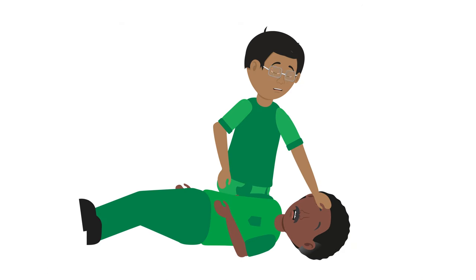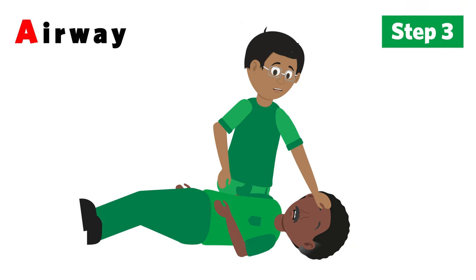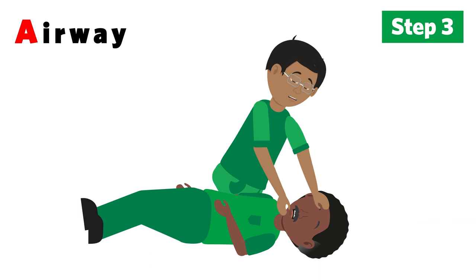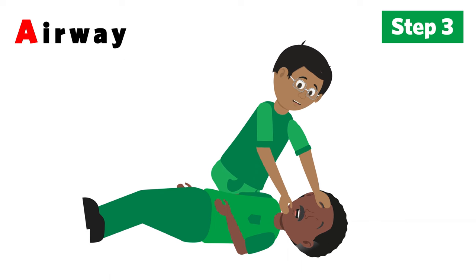A is for airway. If the airway isn't clear then open it by tilting the head back using one hand on their forehead and two fingers under their chin.